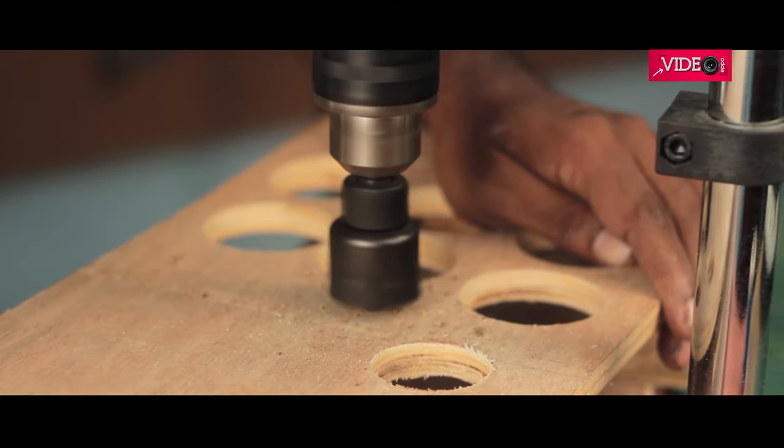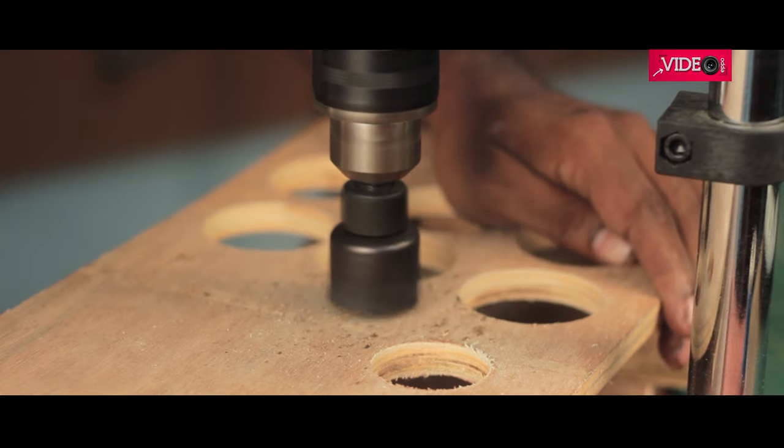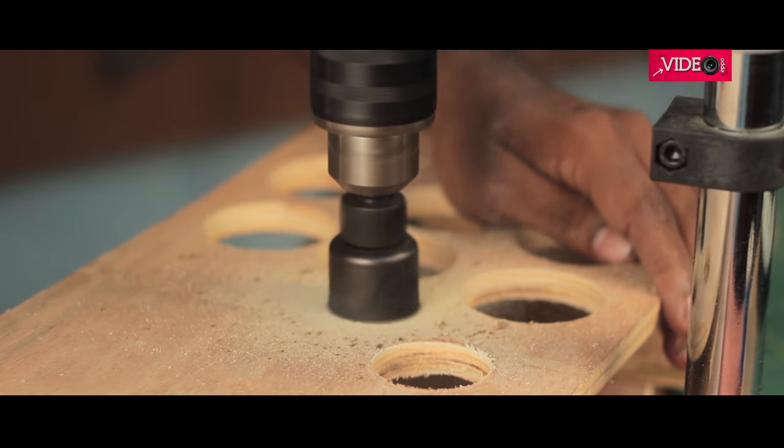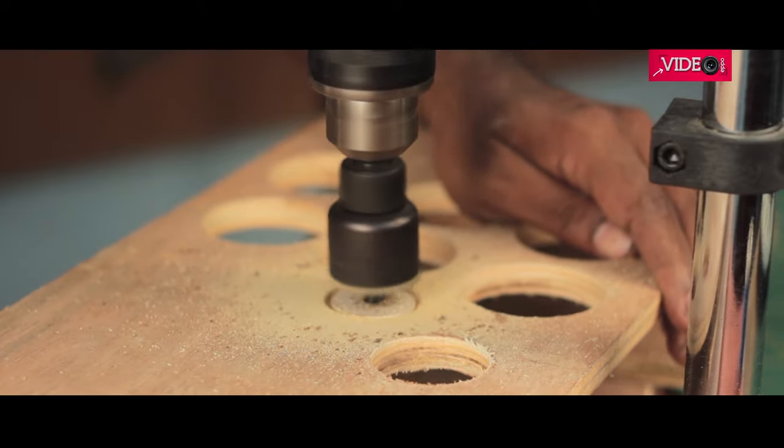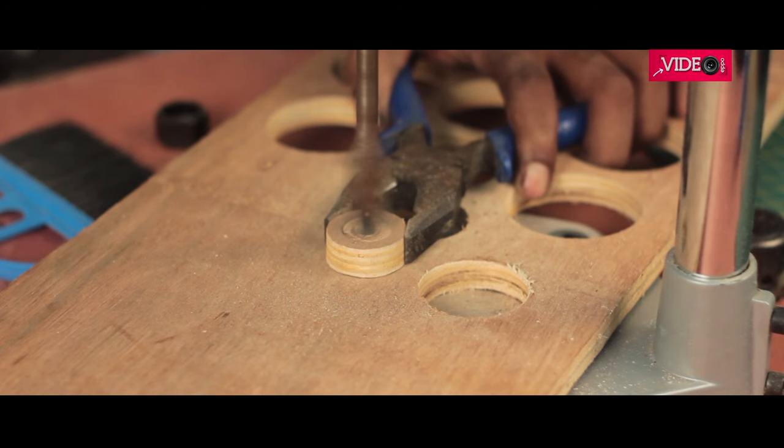For the third one, I used a hole saw to cut out a circular wooden piece. Using a spade bit, I carved out the center meat turning it into a ring.